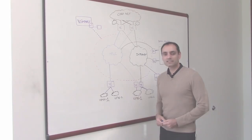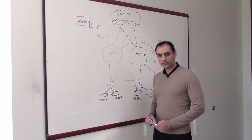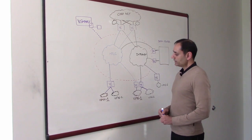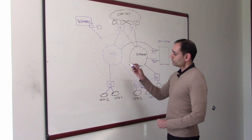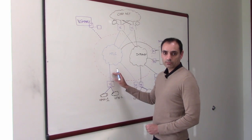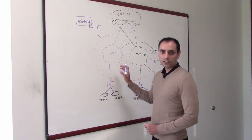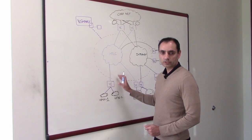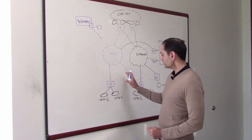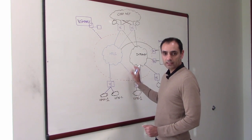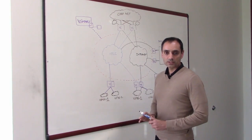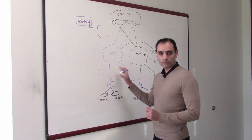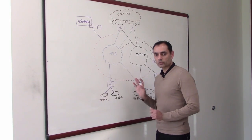Now let's get into what you can achieve with routing in such an overlay environment. First, you should be able to connect the site to any of the existing transports — MPLS, internet, or LTE — and it should become part of the same overlay network.